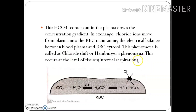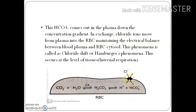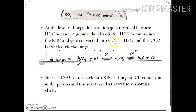At the level of the lungs, this reaction is reversed, because HCO3- cannot be exhaled — it must be converted back to CO2. HCO3- enters the RBC again. In the RBC, HCO3- + H+, under carbonic anhydrase, is converted to H2CO3, and carbonic anhydrase again catalyzes the breakdown of H2CO3 into H2O and CO2, which is then exhaled via the lungs. This is the reverse chloride shift, necessary for the removal of carbon dioxide.